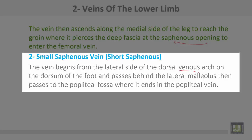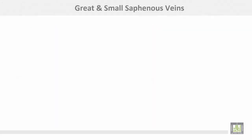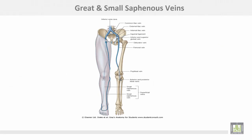The second superficial vein is the small or short saphenous vein. It starts from the lateral side of the dorsal venous arch, then passes behind the lateral malleolus and passes to the popliteal fossa where it ends in the popliteal vein. The great saphenous arises from the medial end and the small saphenous from the lateral end of the dorsal venous arch.